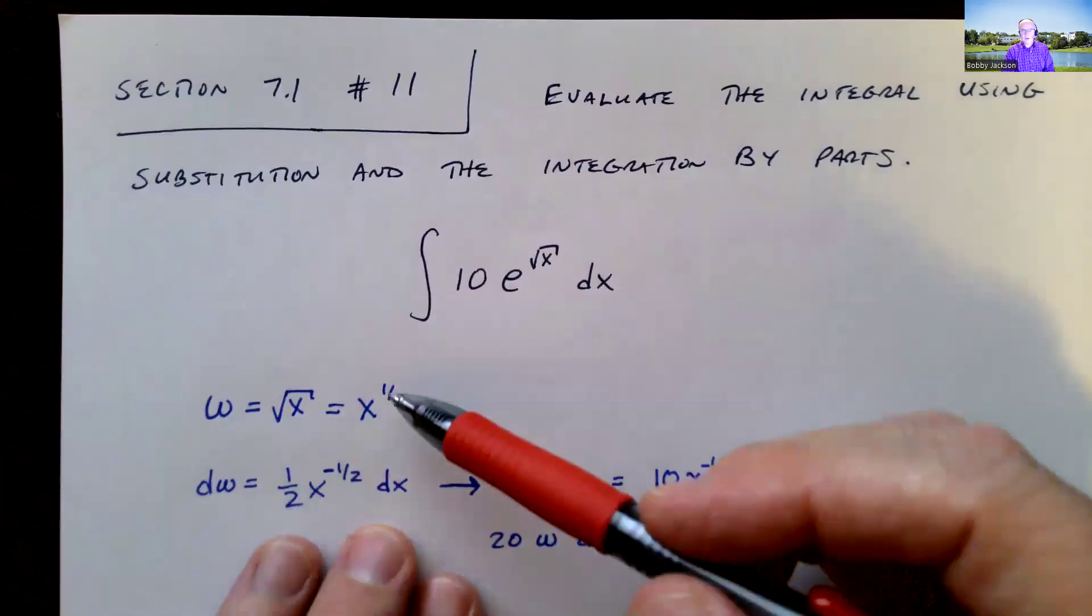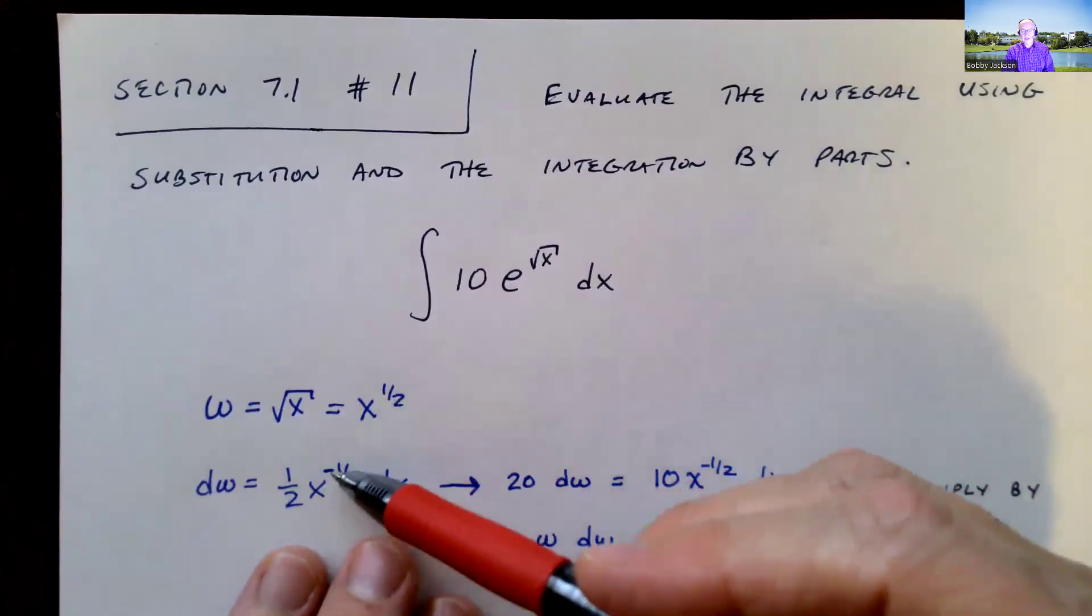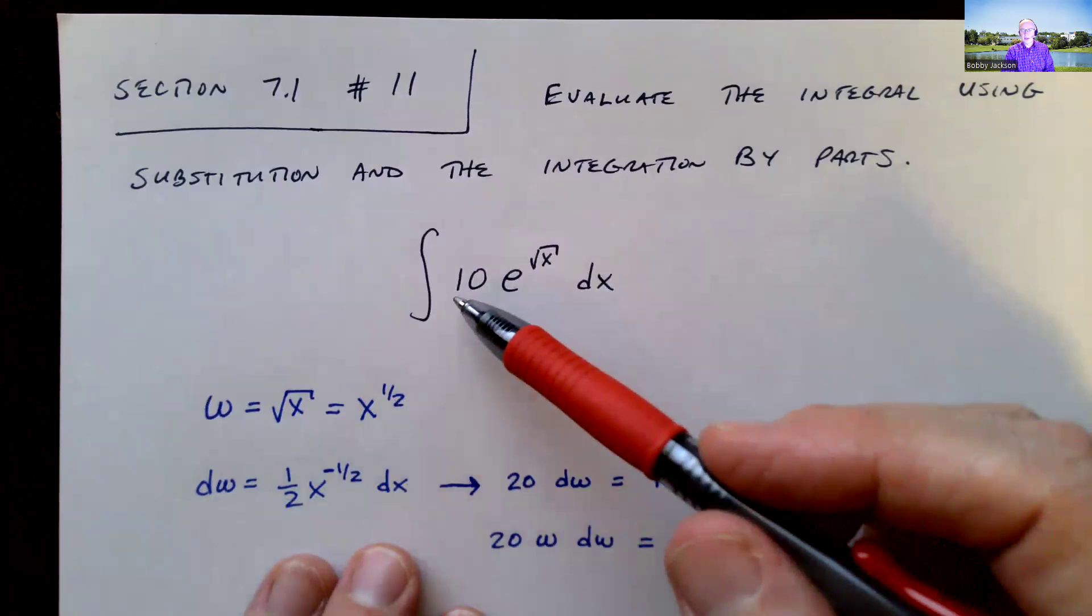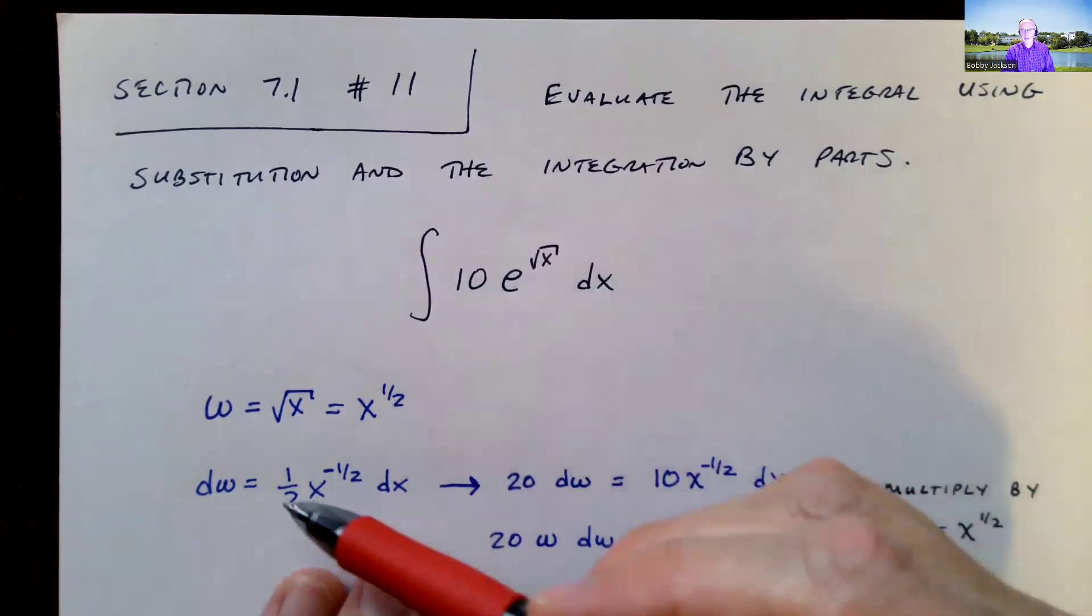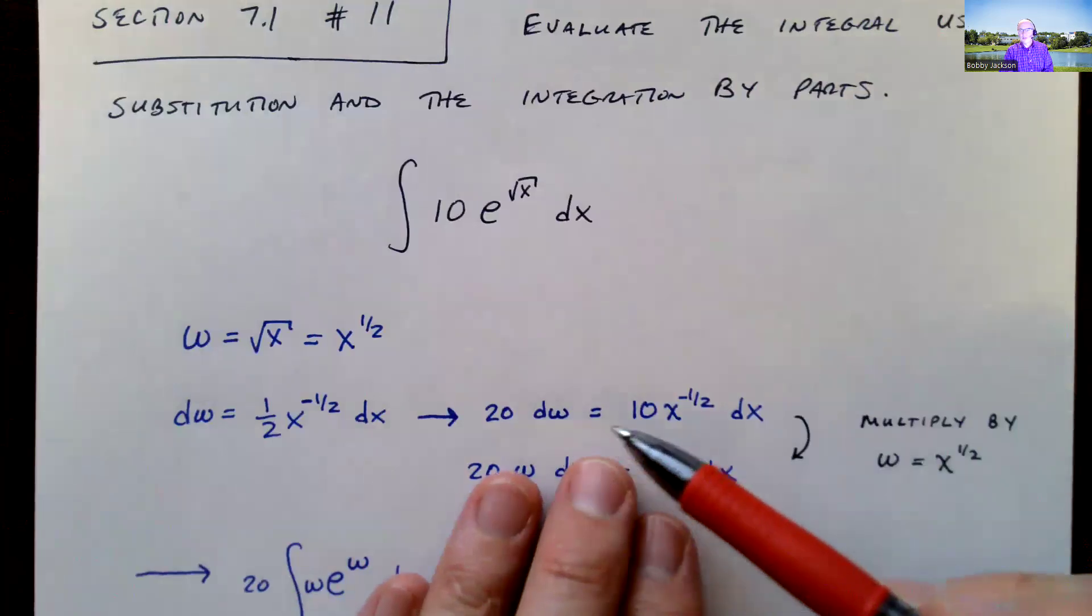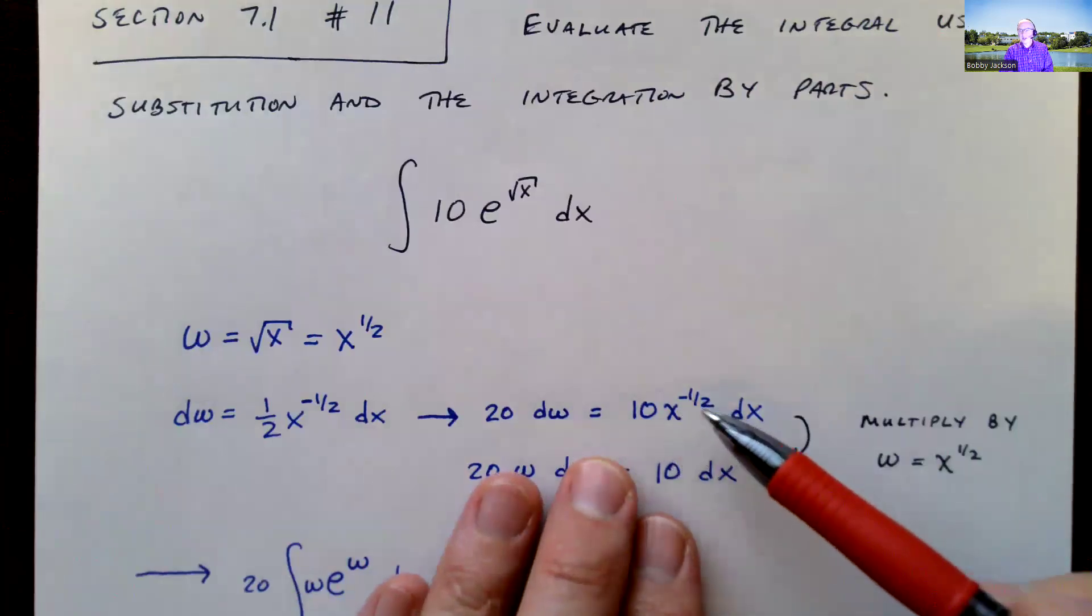And then the derivative is by the power rule one-half x to the negative one-half. So there's my dw. And I look up here, I've got a 10 dx. So let me first multiply both sides by 20.